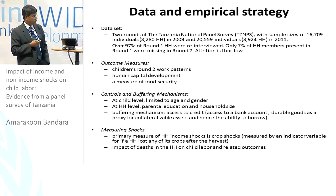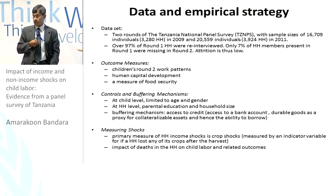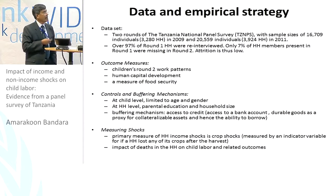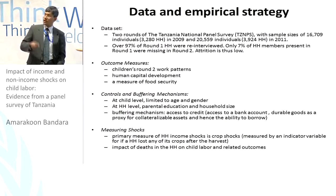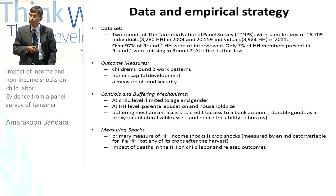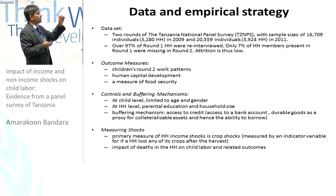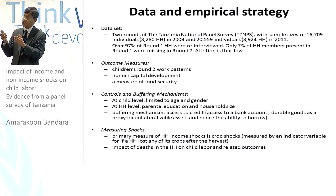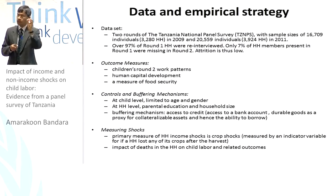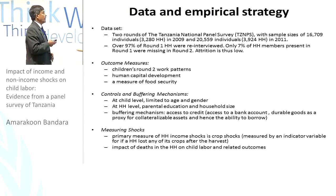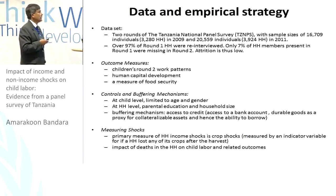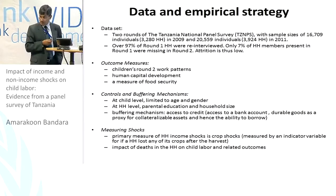Our outcome measures are children's round-two work patterns — whether they work in the labor market as child labor — their pattern of human capital development, and a measure of food security. For the human capital component, we restrict the sample to ages between 7 and 15, as they are the ones who go to school. At the child level, we limit controls to age and gender.